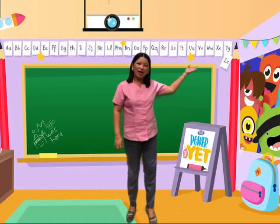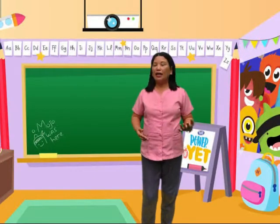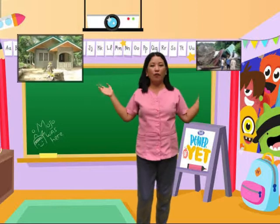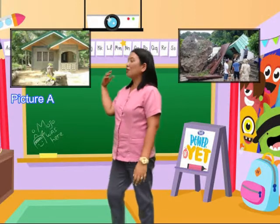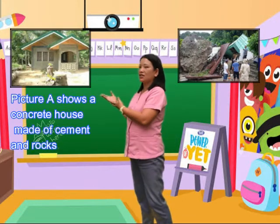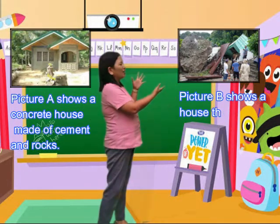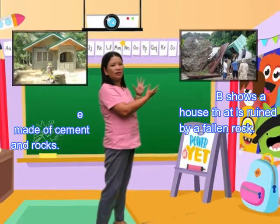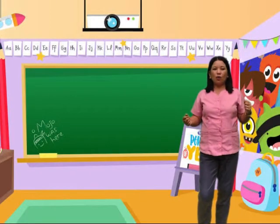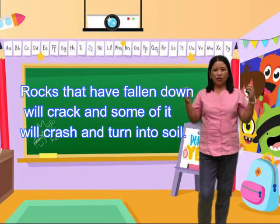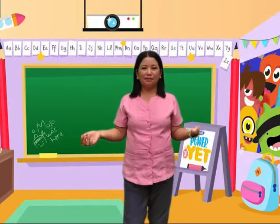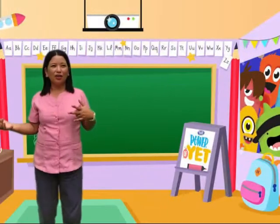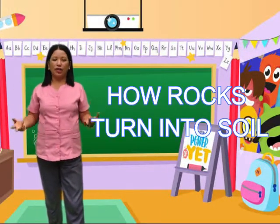It is the Sedimentary Rock, Metamorphic Rock, and Igneous Rock. And now I will show you a set of pictures — Picture A and Picture B — and we are going to differentiate them. Picture A shows a concrete house made of rocks and stones. Picture B shows a picture of a ruined house caused by fallen rocks. That's why when rocks have fallen, they will crack and turn into soil. What do you think is our lesson for today? Yes, very good! It is all about rocks and how they turn into soil.